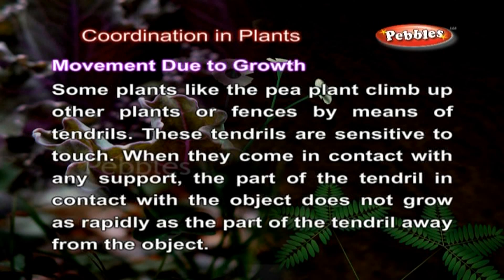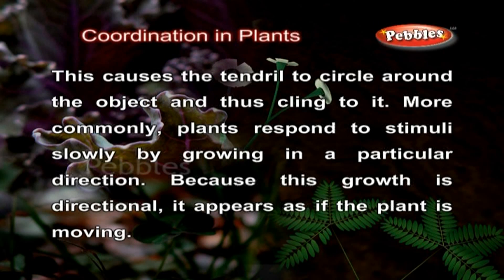Movement due to growth. Some plants like the pea plant climb up other plants or fences by means of tendrils. These tendrils are sensitive to touch. When they come in contact with any support, the part of the tendril in contact with the object does not grow as rapidly as the part of the tendril away from the object. This causes the tendril to circle around the object and thus cling to it. More commonly, plants respond to stimuli slowly by growing in a particular direction. Because this growth is directional, it appears as if the plant is moving.